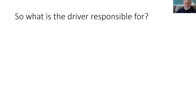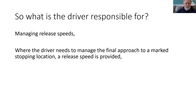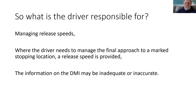So what's the driver responsible for if the system is doing everything? Sometimes you need to have a release speed, and it is the driver's responsibility to drive in accordance with that release speed. On approach to a location where the train needs to stop very close to the designed location in the ETCS, the release speed is provided. That's because the DMI may be inadequate or inaccurate, not allowing the train to get to the right stopping location. The location is marked at the trackside and the driver takes responsibility for driving within the release speed and stopping at the required location.